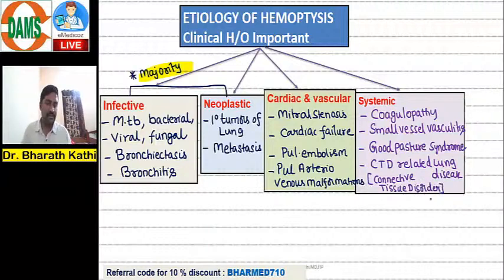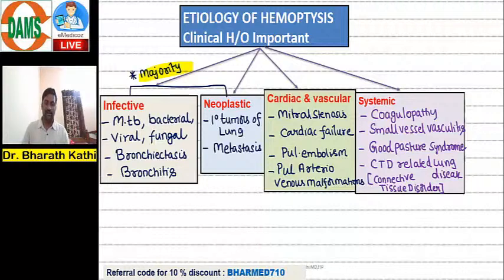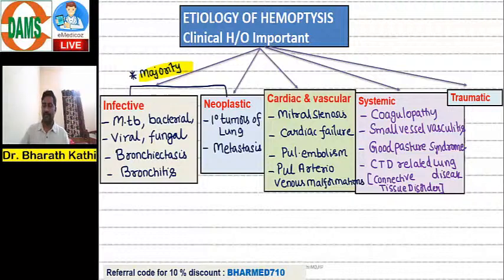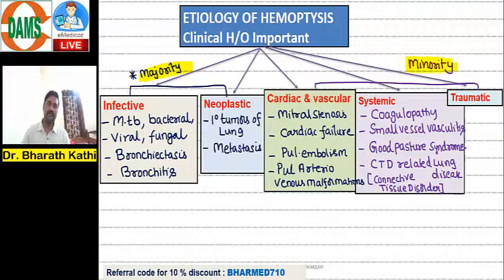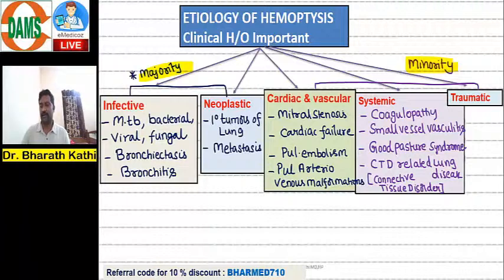Connective tissue disorder-related lung diseases — such as SLE, rheumatoid arthritis, and scleroderma — can cause alveolar hemorrhage as a rare complication. Direct traumatic injury, either penetrating or blunt chest trauma, can also cause hemoptysis. These cardiac, vascular, systemic, and traumatic causes form the minority of hemoptysis cases.